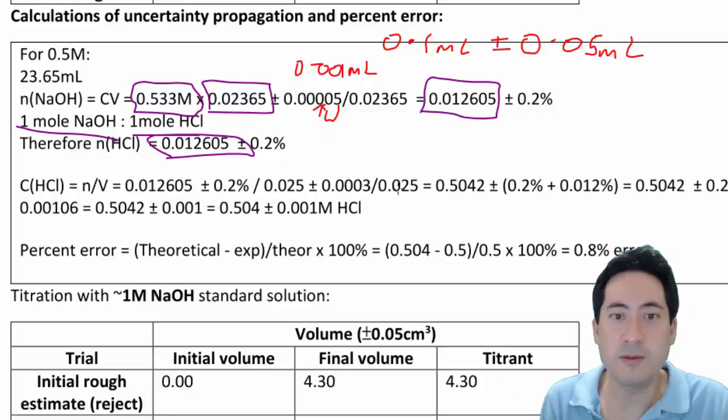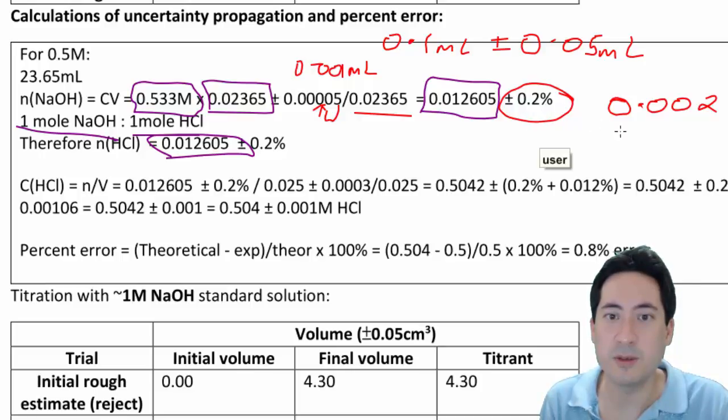Now we're going to be timesing and dividing down here, so we need to get a percentage uncertainty. We take that uncertainty which is 0.005 mils and divide it by this number here, and that gets us 0.2%. If we wanted to work out the actual uncertainty, the raw value of that, we would times that value by 0.002, because this is a percentage here, so the percentage is already times by a hundred.